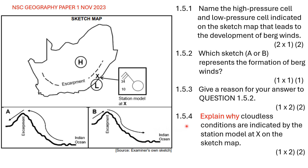Question 1.5.4 says to explain why cloudless conditions are indicated by the station model at X on the sketch map. Please be aware that this question will require both a factor and a qualifier. The weather station at X is indicated as having clear skies — in other words, there is no cloud cover. The reason for that is because ahead of the low pressure, the winds blow offshore. Offshore winds are warm, dry winds, and because they originate over land and blow offshore, they create clear conditions at weather station X.